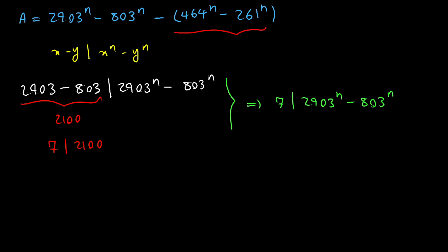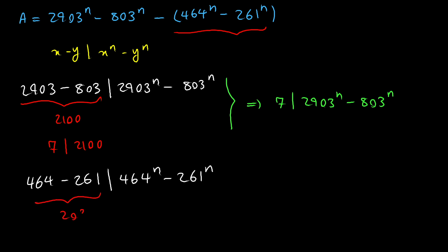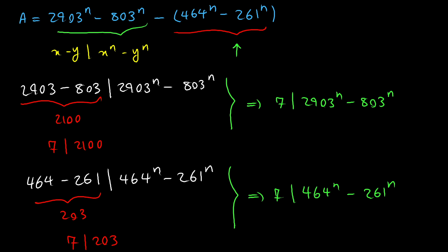Now let's do the same thing with these two terms. We can say that 464 minus 261 divides 464 to the nth power minus 261 to the nth power, and the left hand side is 203. Again, 7 divides 203, and since 203 divides our number, we can say that 7 divides 464 to the nth power minus 261 to the nth power. So we prove that both parts are divisible by 7, meaning a is divisible by 7.